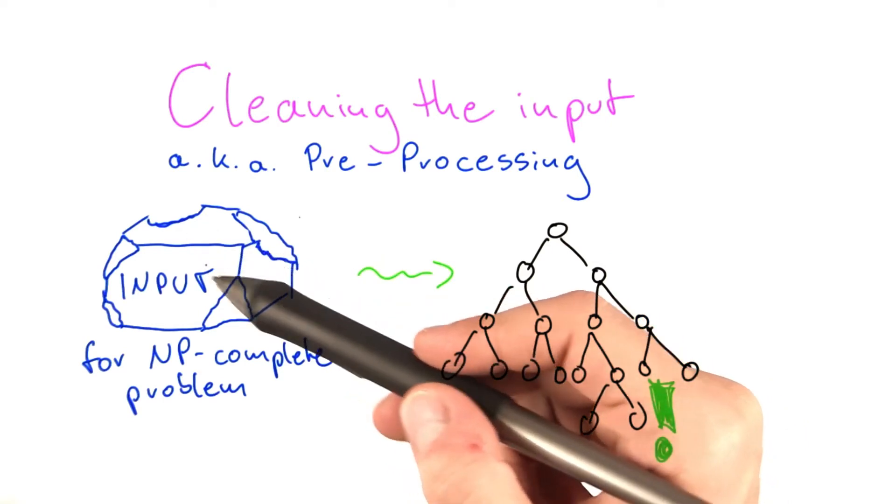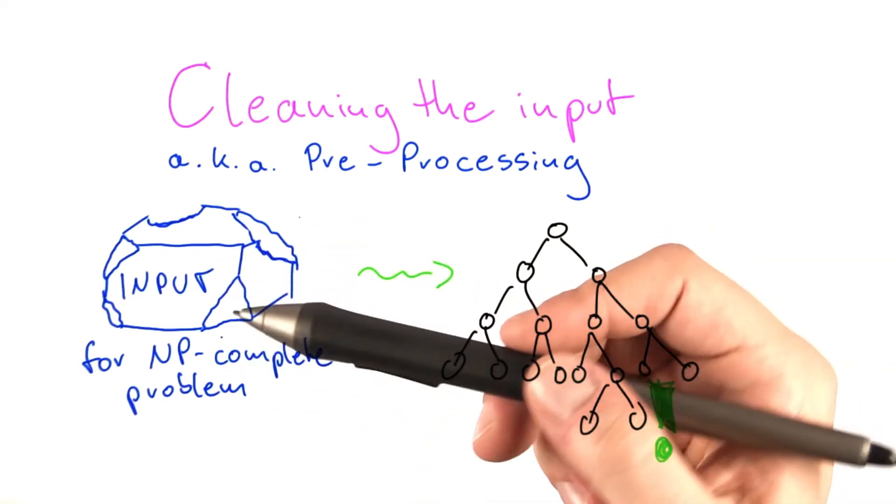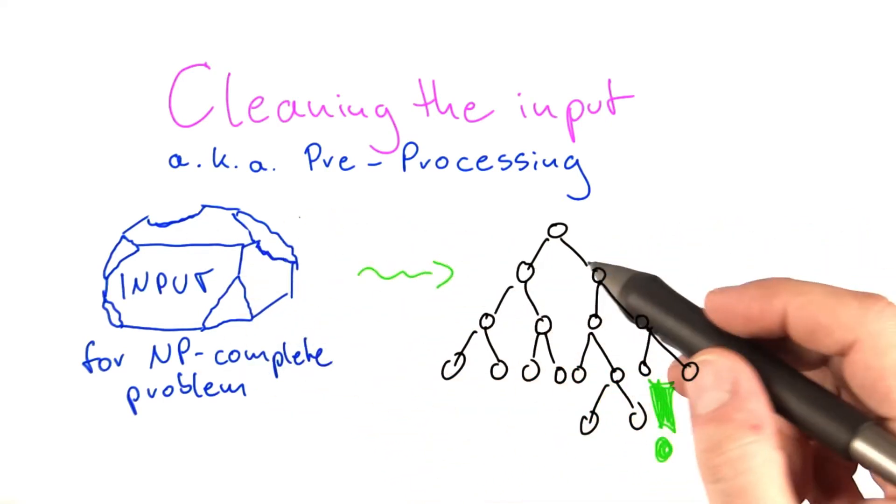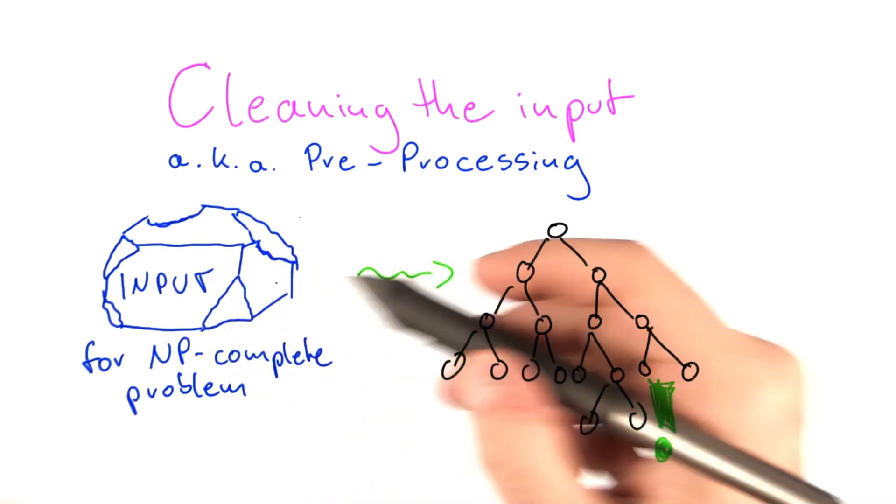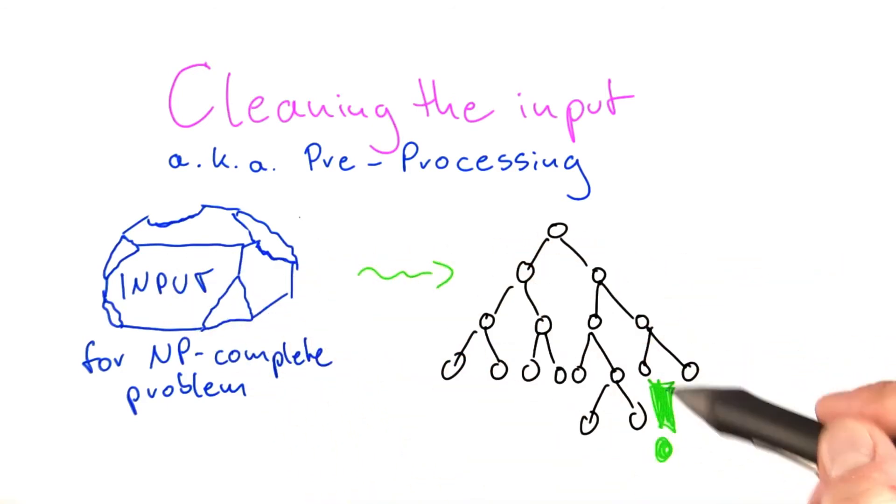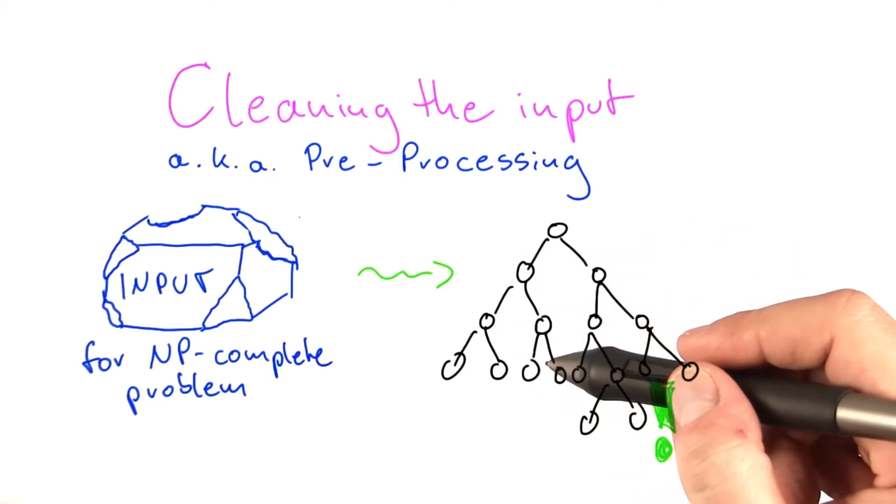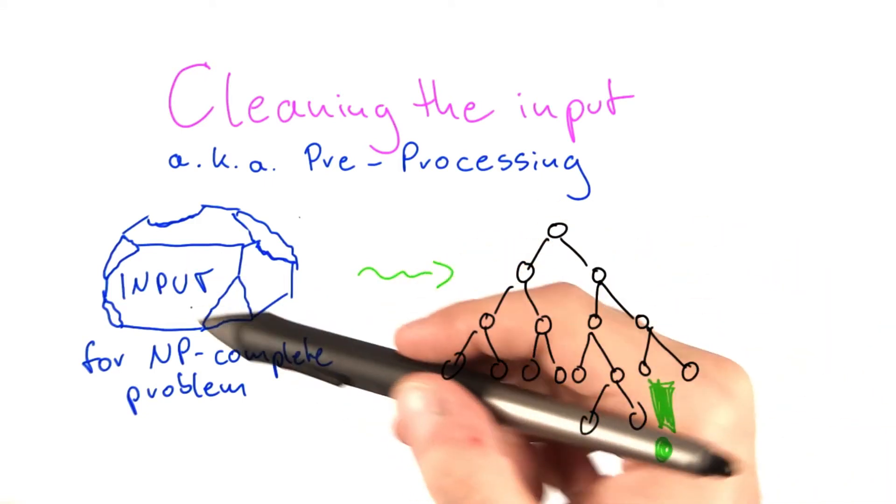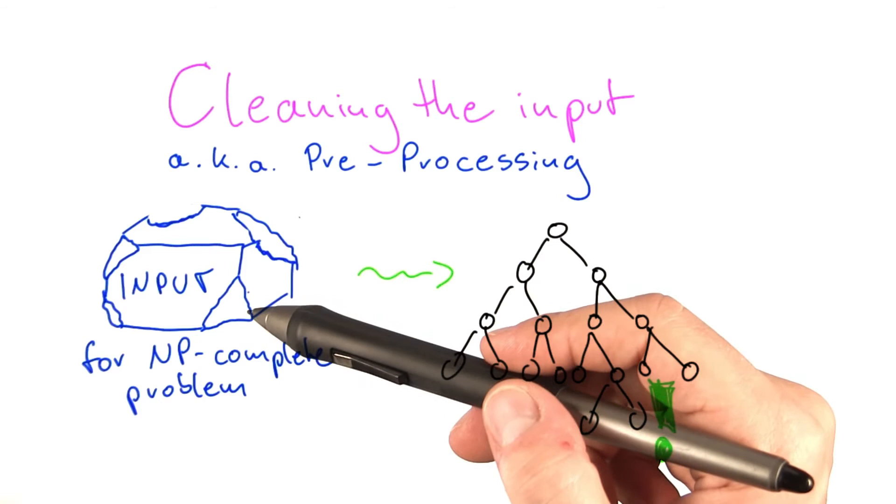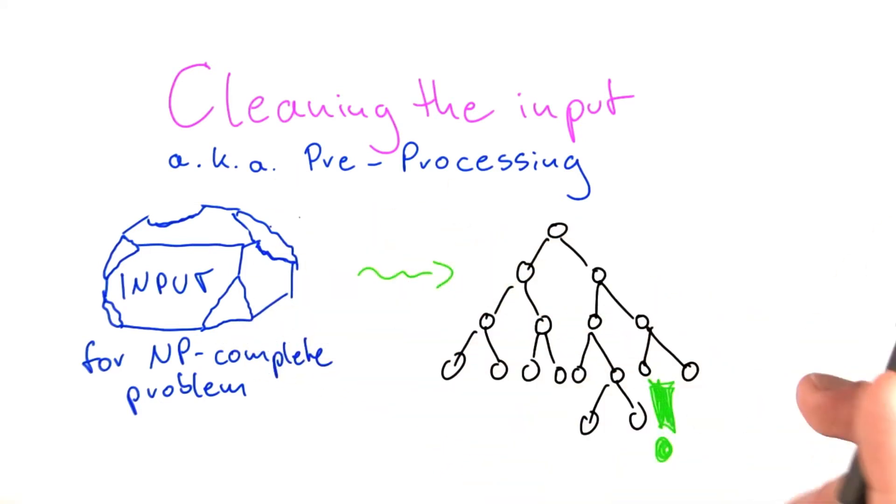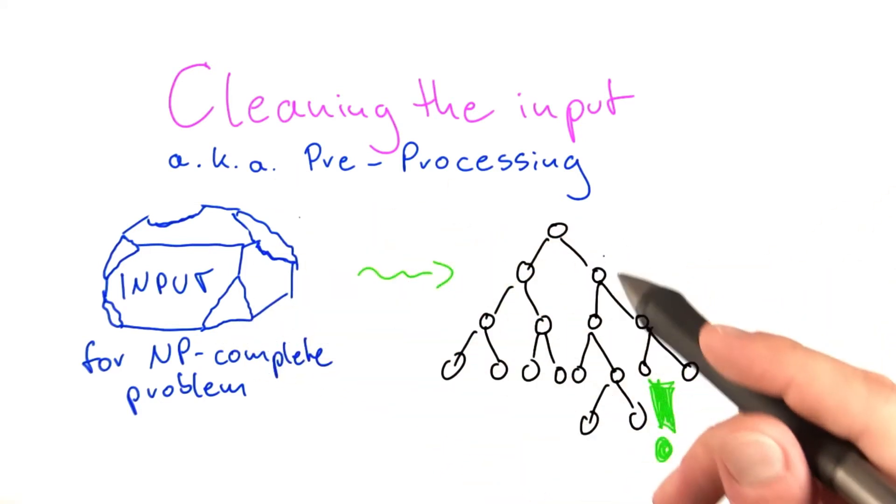And what that means is if your preprocessing is successful, or especially if it's very successful, then the search tree that results from that input is not going to be as big. So there's certain parts of the search tree that you don't have to do because you already have found out in the preprocessing what that part of the solution is going to look like. So the search tree size will decrease.